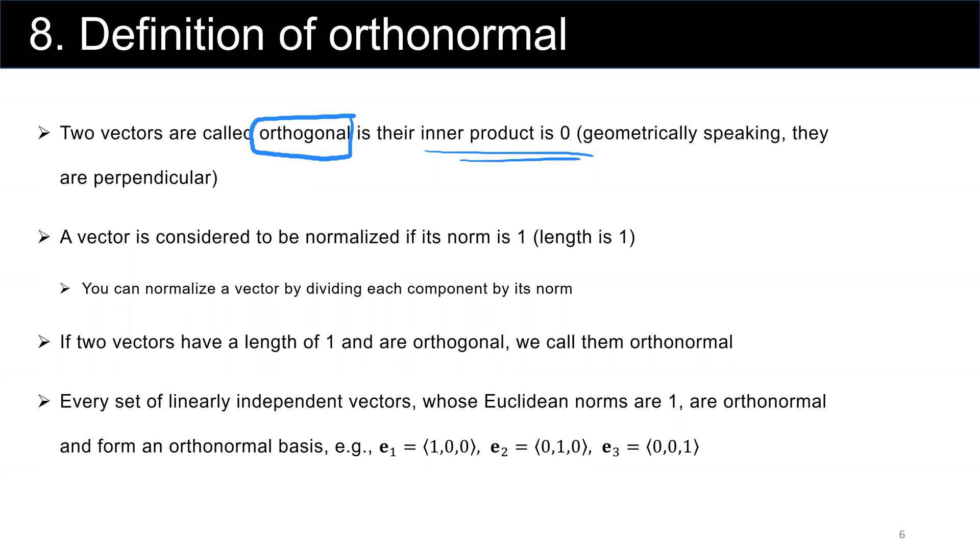A vector is considered to be normalized if the norm of that vector or its length is equal to one. We can simply normalize the vector by dividing each of its components by its norm. Let's take a look at an example.